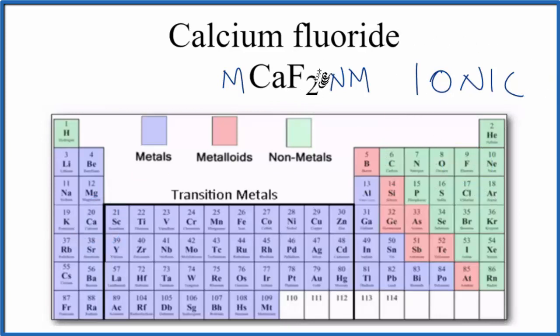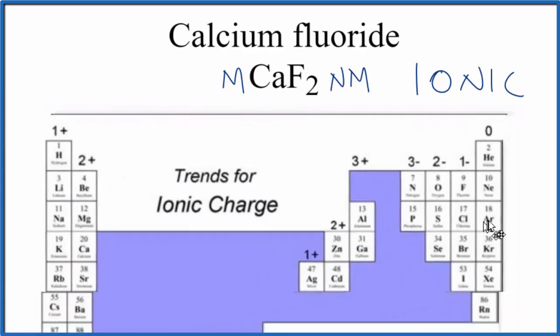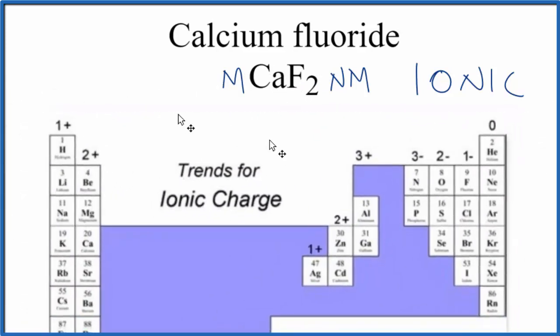You might wonder why we have two fluorine atoms and only one calcium. If we look at the periodic table, this periodic table has the charge listed for each group here. Calcium is in group 2, so it has a 2 plus ionic charge. When it forms ions, they're 2 plus.